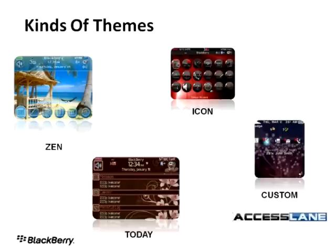Users of older BlackBerry smartphones, such as the Curve 8300, may be more familiar with icon-based themes where all of the application icons appear on the home screen — you can see this on the upper right. Another kind of theme, reintroduced in BlackBerry device software version 5.0, is the Today theme. The Today theme is a very dynamic form of theme where information such as your latest emails, recent phone calls, MMS and SMS messages, and calendar appointments appears on your home screen. And then finally, we have custom themes, which let you take the various properties of the other theme types and create something completely unique.